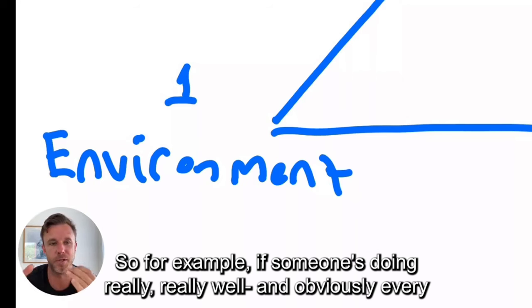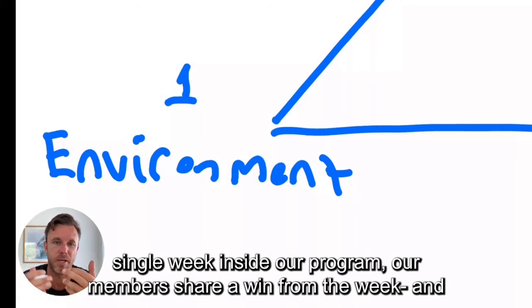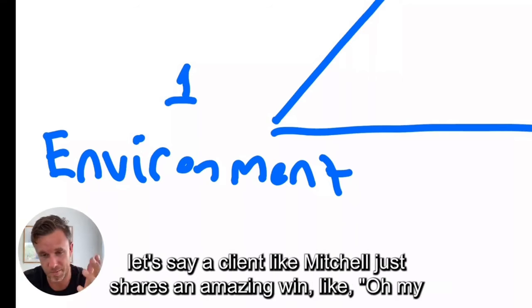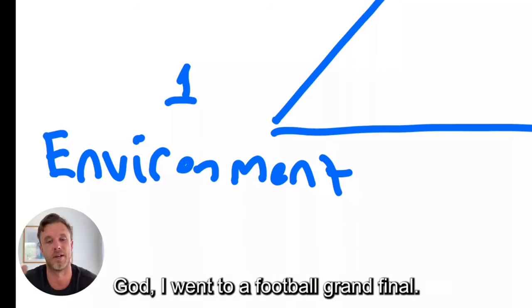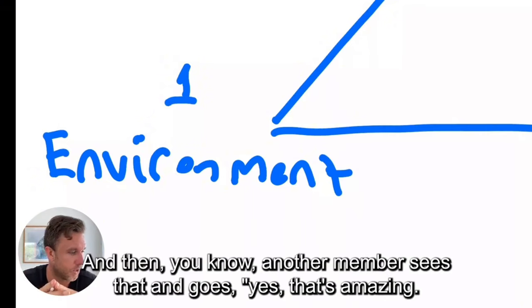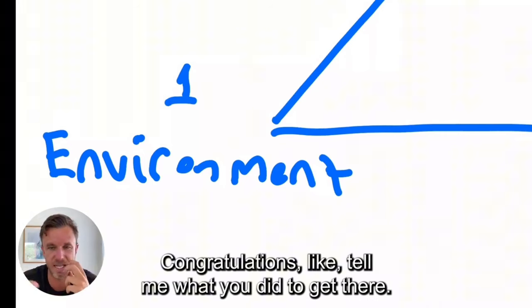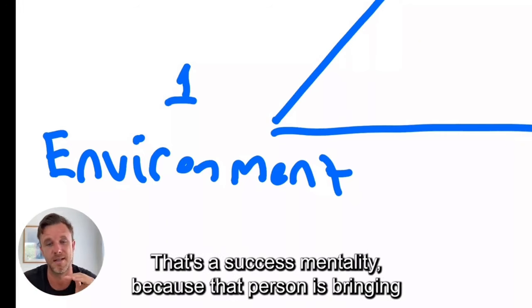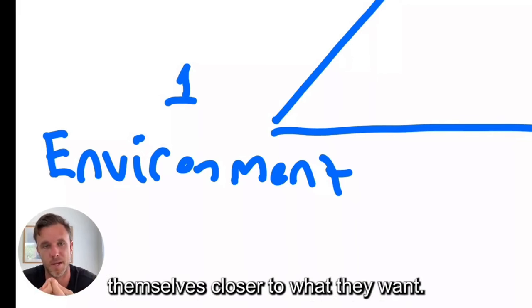One is the success identity where we look for what we want and what we really believe in. So for example, if someone's doing really well, and obviously every single week inside our program, our members share a win from the week. And let's say a client like Mitchell just shares an amazing win, like, oh my God, I went to a football grand final, it was amazing. And then another member sees that and goes, yes, that's amazing. Congratulations. Tell me what you did to get there. That's a success mentality because that person is bringing themselves closer to what they want.